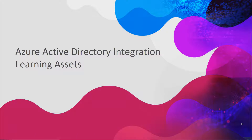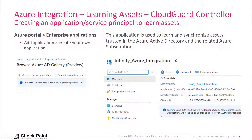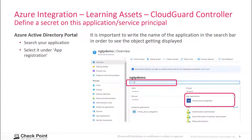Now we look into the configuration of how to learn assets on the Checkpoint Management server. In Microsoft Azure, we need to create an application or service principal. This application or service principal has an application ID and it resides in our Active Directory. We need to define a shared secret that can be used by the Checkpoint CloudGuard controller to use this object for reading the assets.